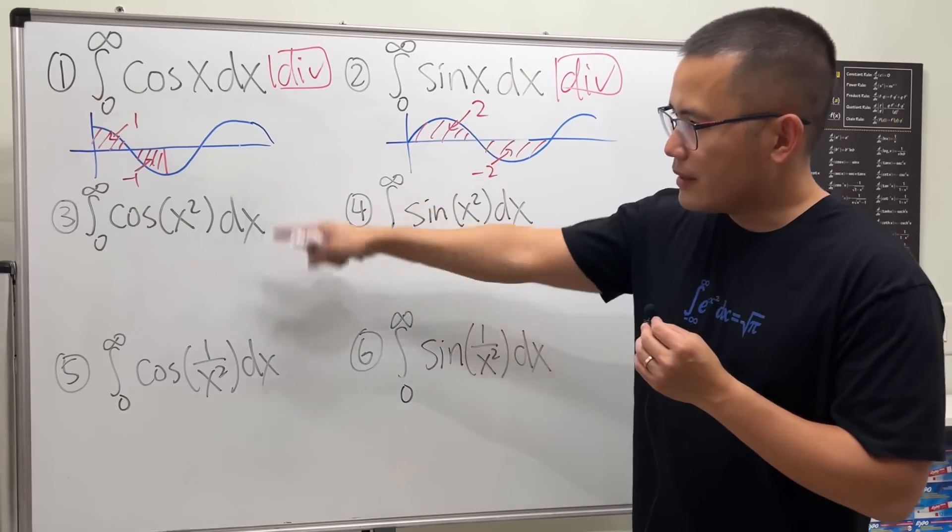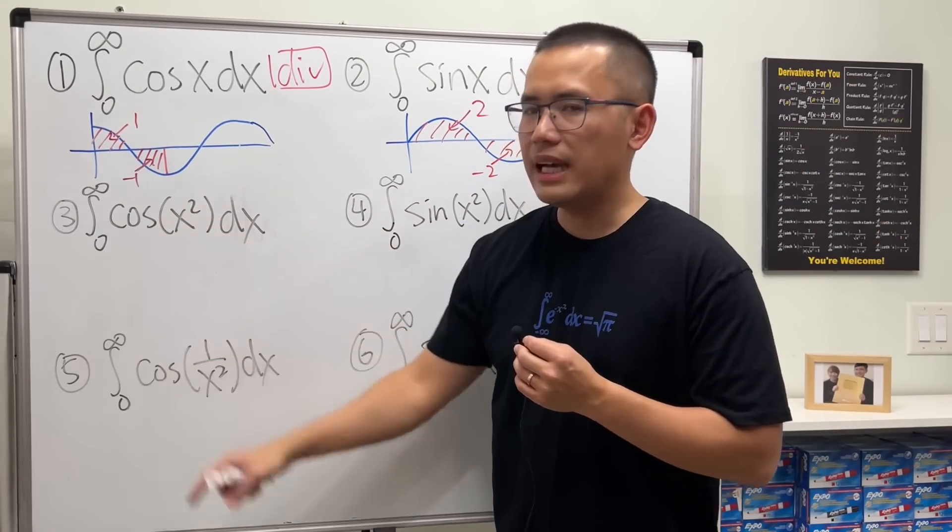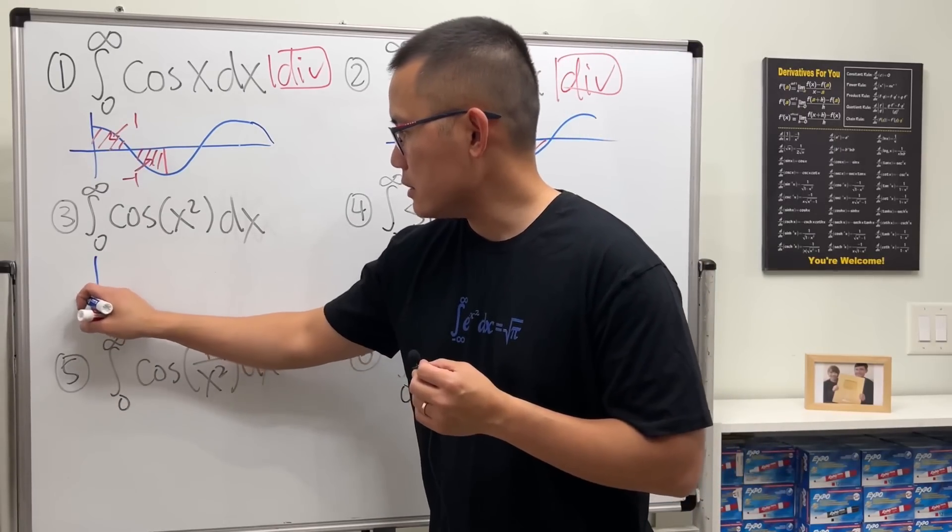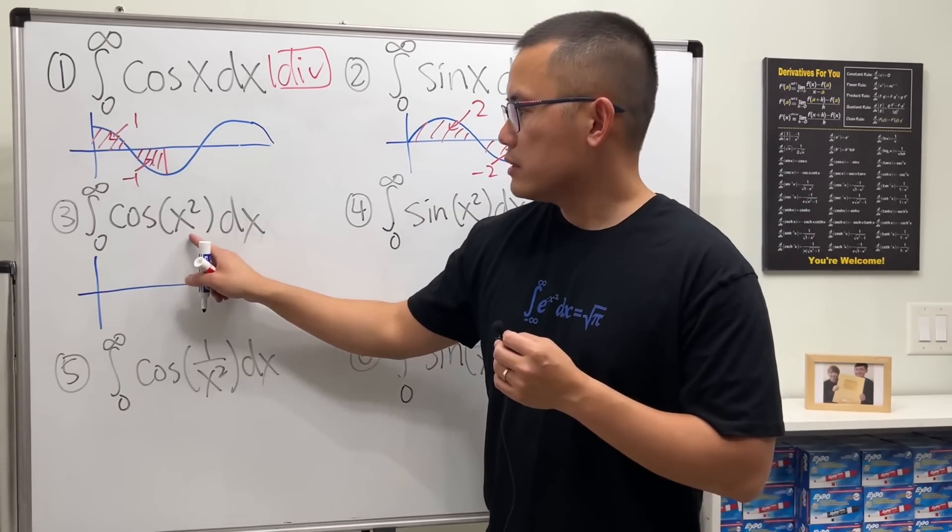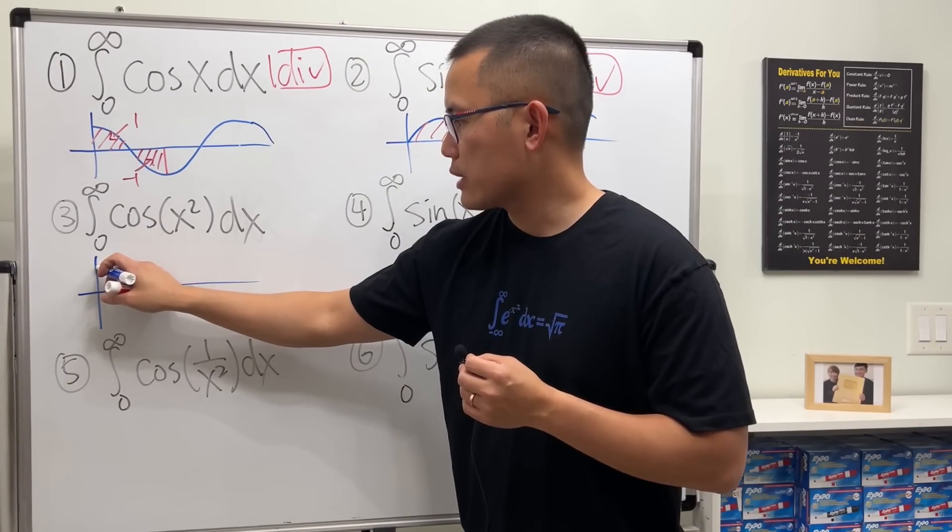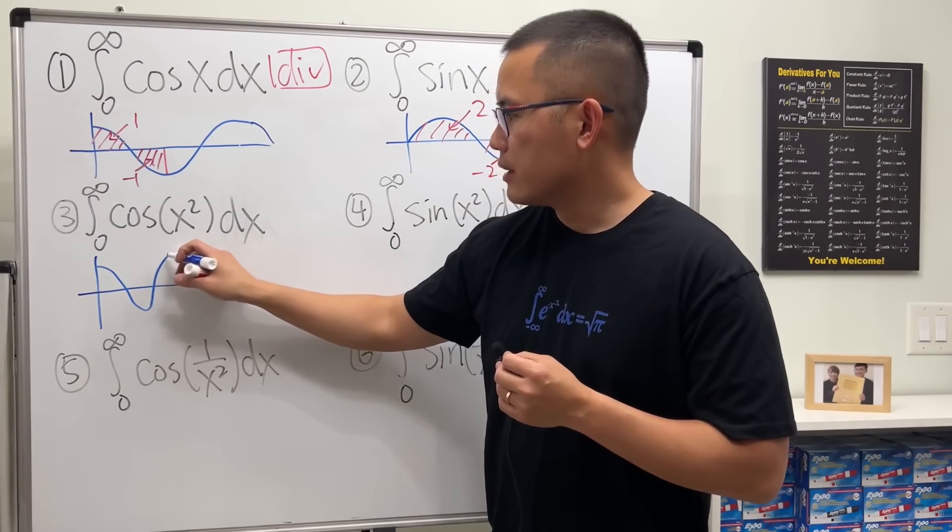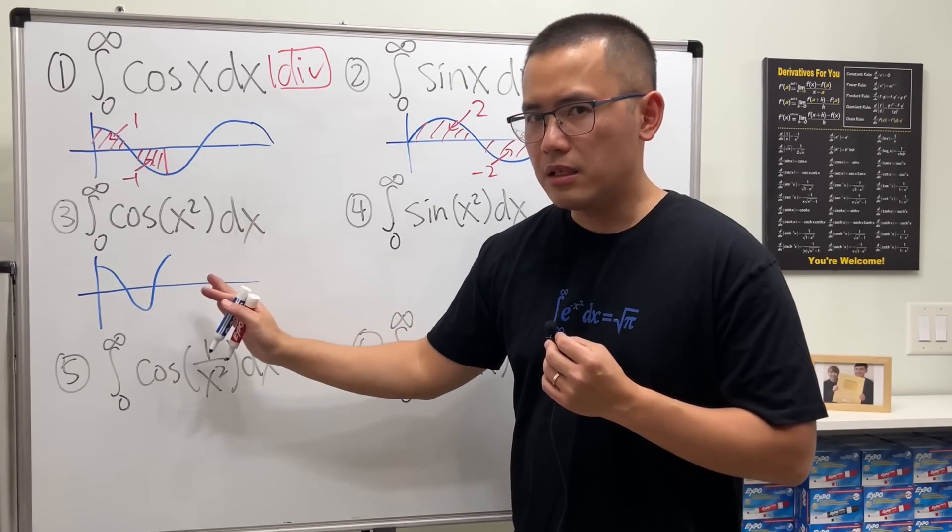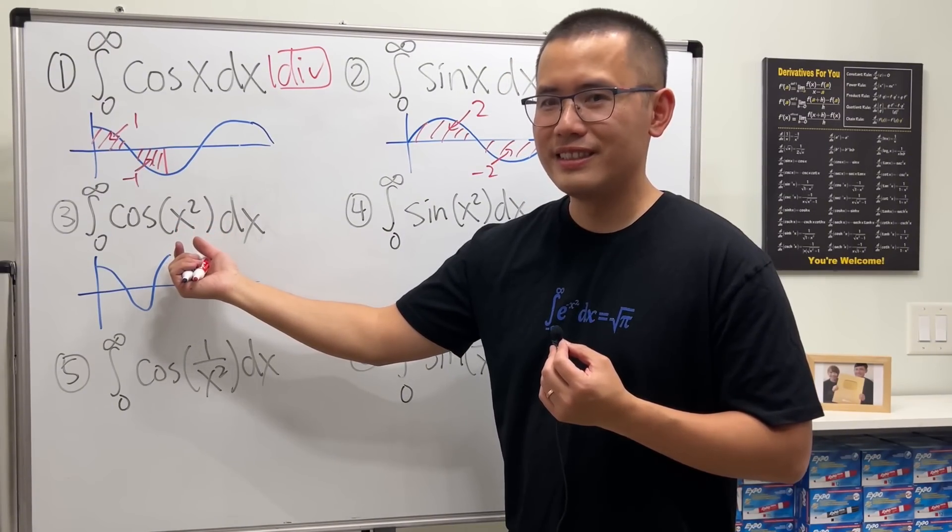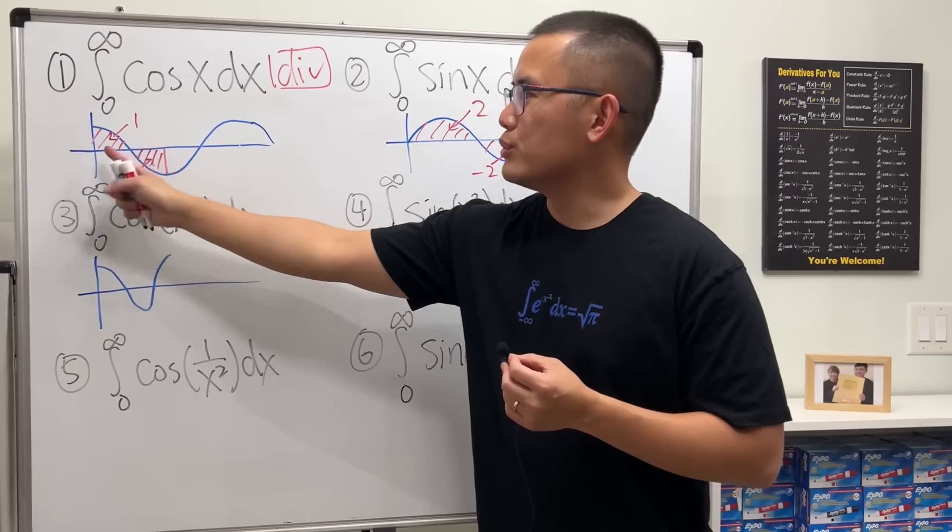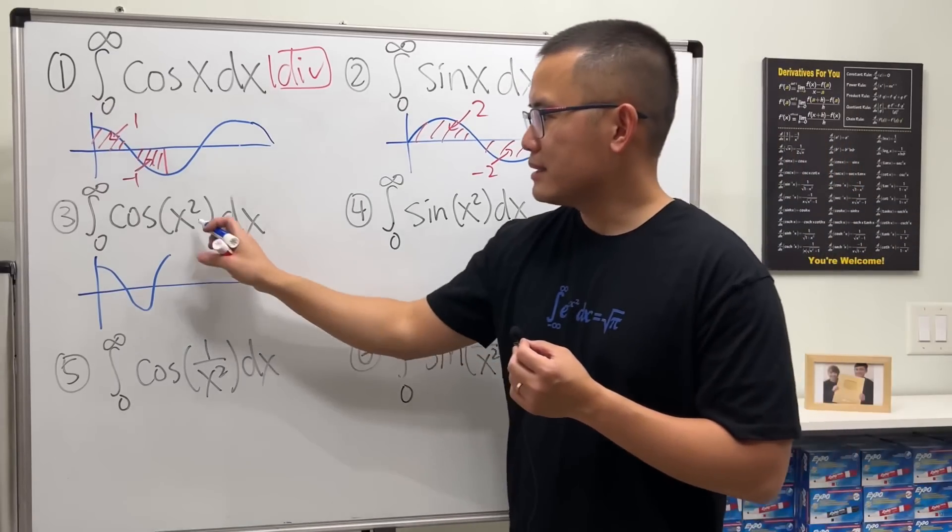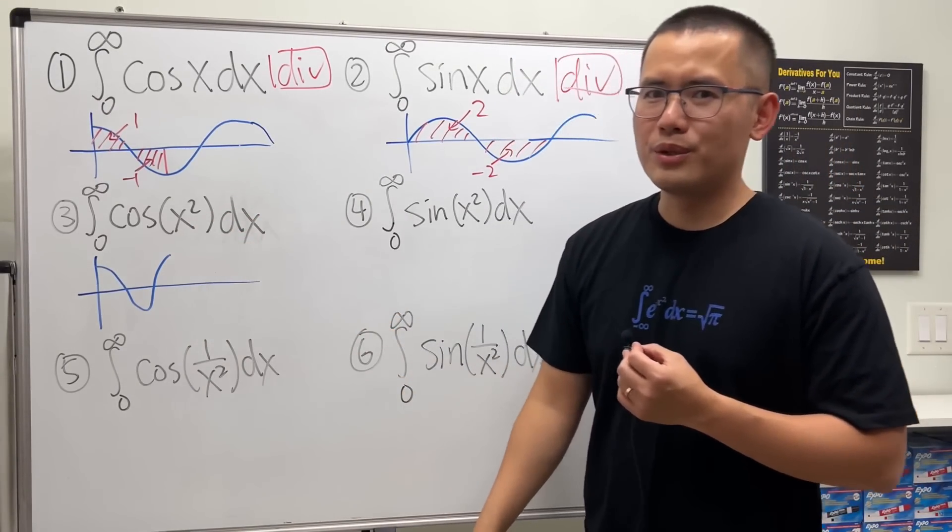Now, it gets interesting when we have x squared inside of the cosine because the picture looks like this. We still start at cosine 0, which is 1. And I'll tell you, it actually goes down and then come back up. But here though, the period, there's no period for this. Earlier, the period is just 2 pi. So it's just a duplication than the before. But when you have x squared, there's no period for that.